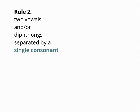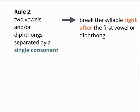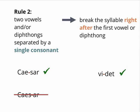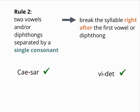Note the diphthongs. Second, there can be two vowels and/or diphthongs separated by a single consonant. In this case, the consonant is taken with the latter vowel or diphthong — this is the natural pronunciation. For example, we would say kai-sar rather than kais-ar, and wi-det rather than wid-et. The split occurs right after the first vowel or diphthong, and the consonant joins the next syllable.